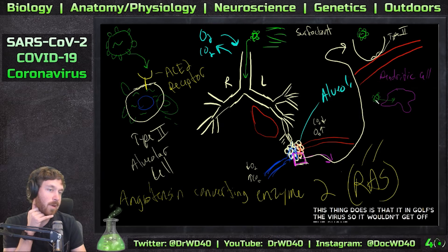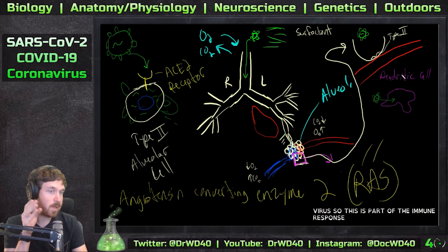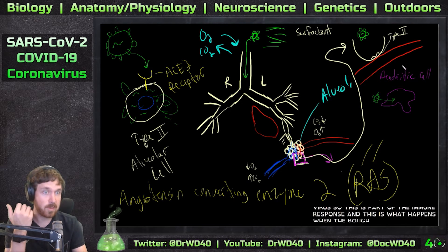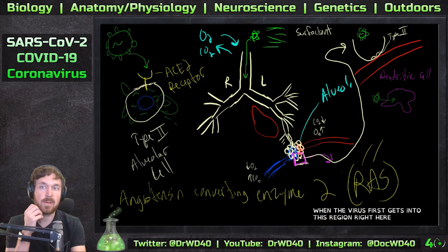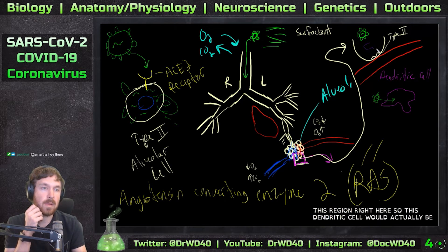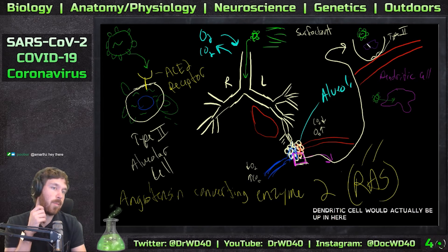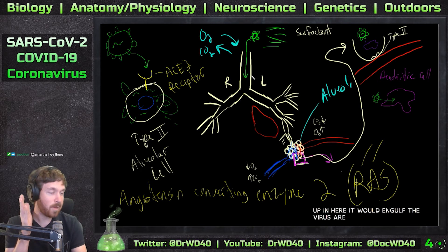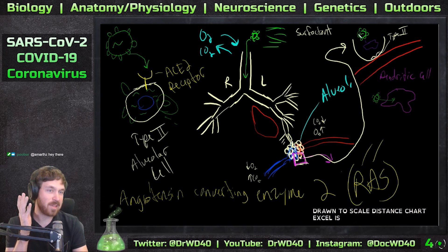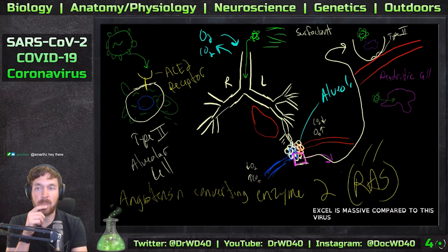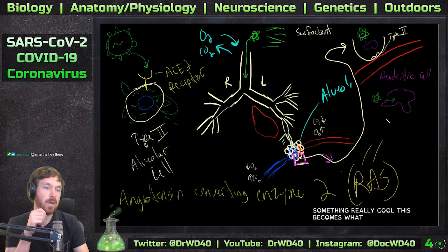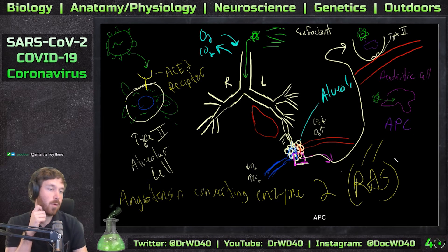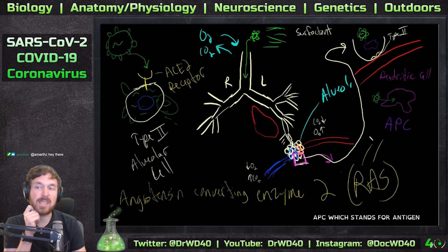This is part of the immune response - this is what happens when the virus first gets into this region. This dendritic cell would actually be up in here and would engulf the virus there. This isn't drawn to scale - this dendritic cell is massive compared to this virus. What happens then is really cool: this becomes what's called an APC, which stands for antigen-presenting cell.